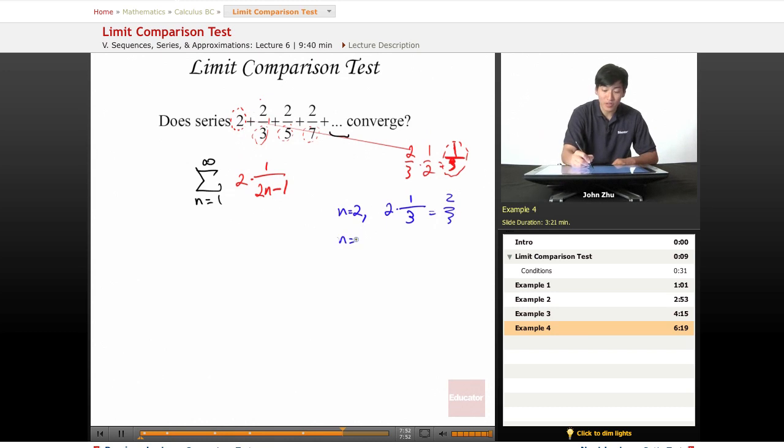And let's check the third term as well. So 2 times 1 over, 3 times 2 is 6, minus 1 is 5, which equals 2 over 5. So we know that this expression checks out.